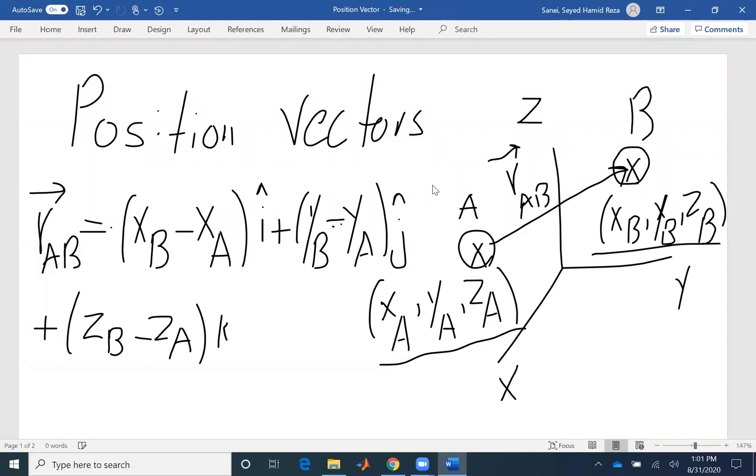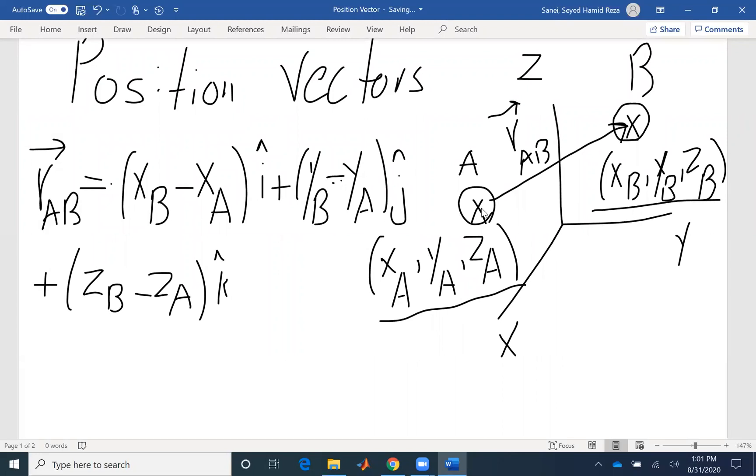RAB is the coordinate of B minus the coordinate of A. Or you can think of it as: we are moving from A to B, how many unit vectors are we moving in x direction, in y direction, in z direction.